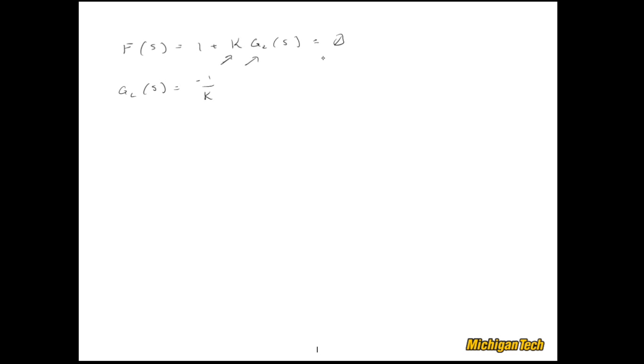Now of course, a root locus is all possible closed loop pole locations for all possible positive values of k. So I know that what I'm working on here, k is positive. So here's the trick. What I'll do is consider both sides of this equation as if they're complex numbers.